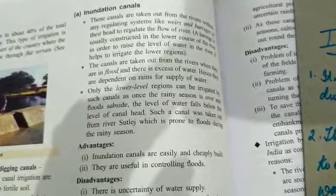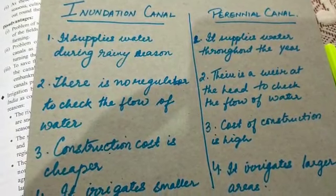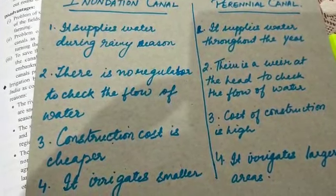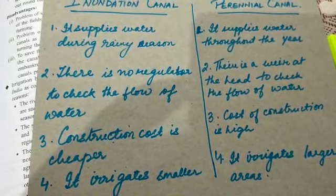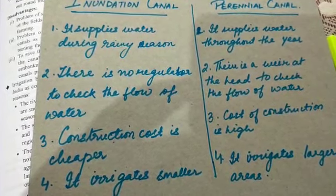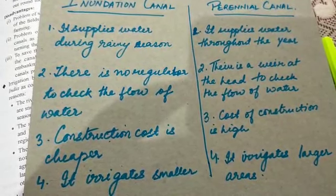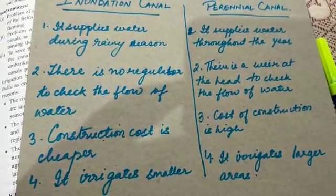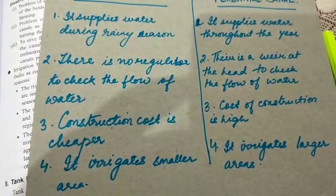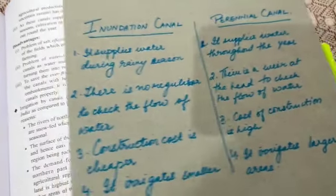The difference between inundation canals and perennial canals: Inundation canals supply water during the rainy season only, whereas perennial canals have water available throughout the year. There is no regular regulator to check the flow of water in an inundation canal, but perennial canals have a weir or barrage at the head to control flow. Inundation canals are cheaper to construct, while perennial canals are costly. Inundation canals irrigate only a smaller area, whereas perennial canals irrigate a larger area.